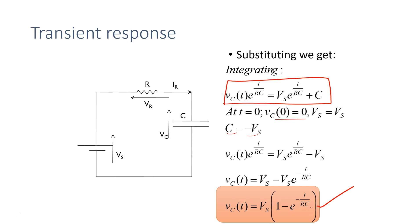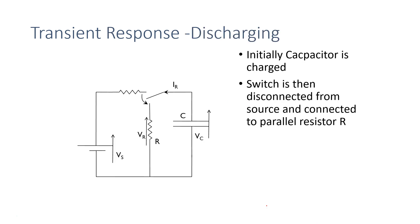This is typically known as the charging equation of the capacitor. As T goes to infinity, the exponent goes to minus infinity, the exponential term goes to 0, and 1 minus 0 is 1, so Vc equals Vs — we've reached steady state at T equals infinity.